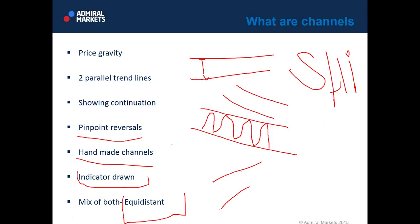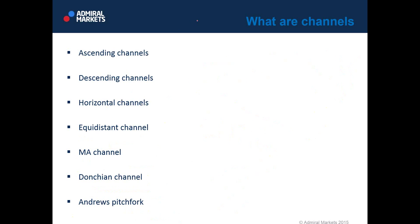I personally started with manually drawn channels, then moved to indicator-drawn channels, and today I use both — a mix of both types, the equidistant channel. Types of channels are: ascending channels, descending channels, horizontal, equidistant channels, MA channel, Donchian channel, and Andrew's Pitchfork. Andrew's Pitchfork is a little bit different — it's one of those channel types which have more than just channels in the teaching of it. We will talk about Andrew's Pitchfork in a separate webinar.